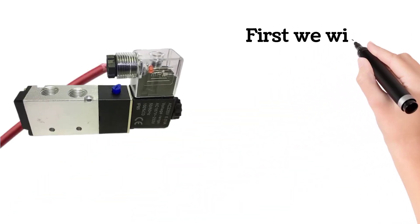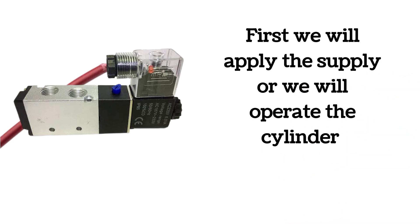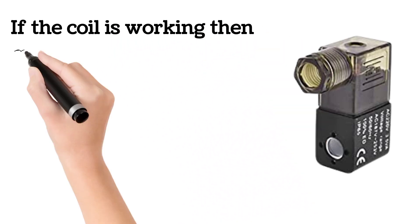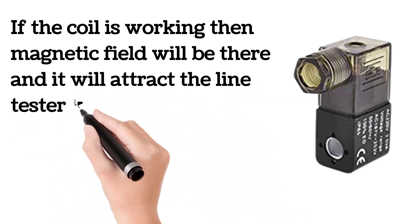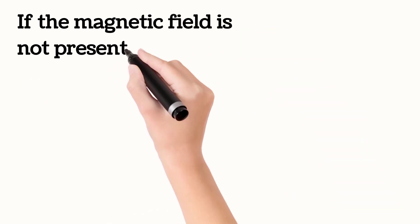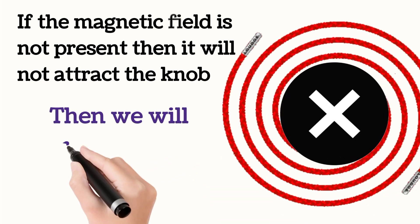For checking SOV coil, first we will apply the supply for the coil or we will operate the pneumatic cylinder. If the solenoid coil is working, then magnetic field will be there and it will attract the line tester knob. If we take the line tester knob inside the coil, then we can feel that the coil is attracting the tester knob. If the magnetic field is not present, then it will not attract the line tester knob. Then we will replace the coil of the SOV.